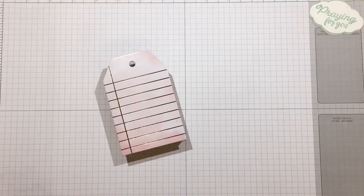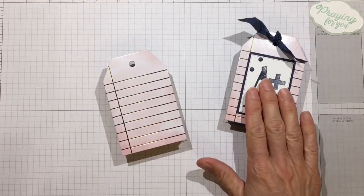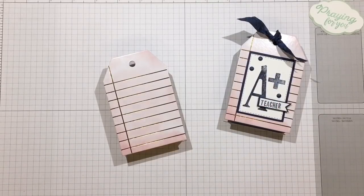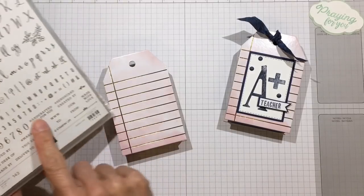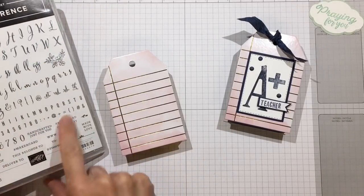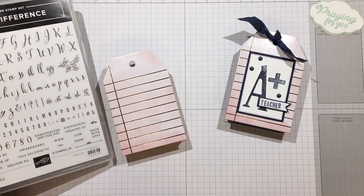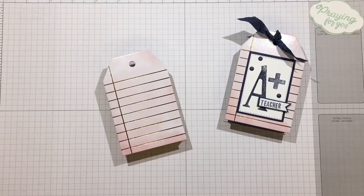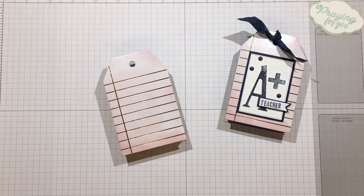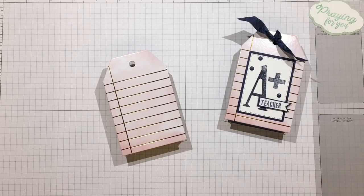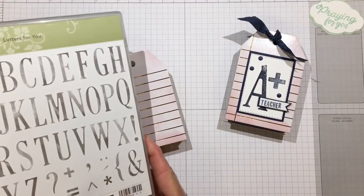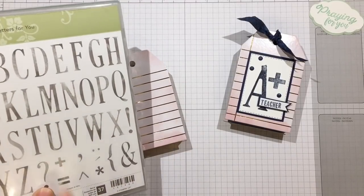Let's go ahead and embellish it. This is one I made for the teacher. I looked through all my stamps and found out that I did not have a teacher stamp, so what I did was I stamped out 'teacher' by using this alphabet from the Make a Difference stamp set. The A-plus I used with the Letters for You set.